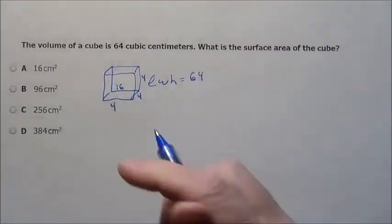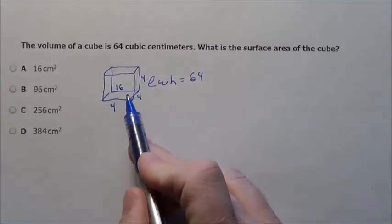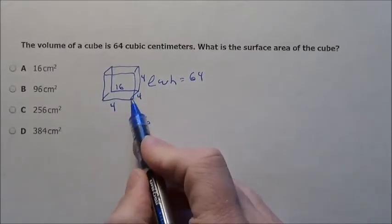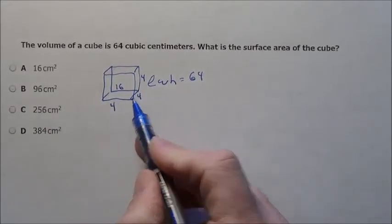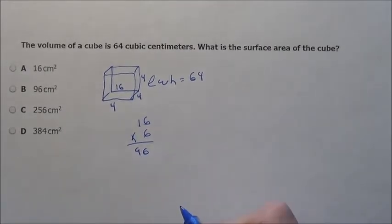Just think of it as when you're playing with dice. Every die has six faces that are the same. Well, if all of them have an area of 16, and you have 6 of those 16's, when you multiply it, I got 96 here.